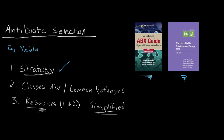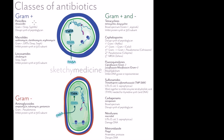Now that we've reviewed strategy briefly, let's go over your classes of antibiotics and common pathogens. Here is a picture that does a fairly good job representing your most common antibiotic classes. When we think of antibiotics, we think of the common organisms they affect — usually gram-positive or gram-negative organisms. The most common and well-known antibiotics are your beta-lactams, which include penicillins, cephalosporins, carbapenems, and monobactams, and those have excellent activity against gram-positives.